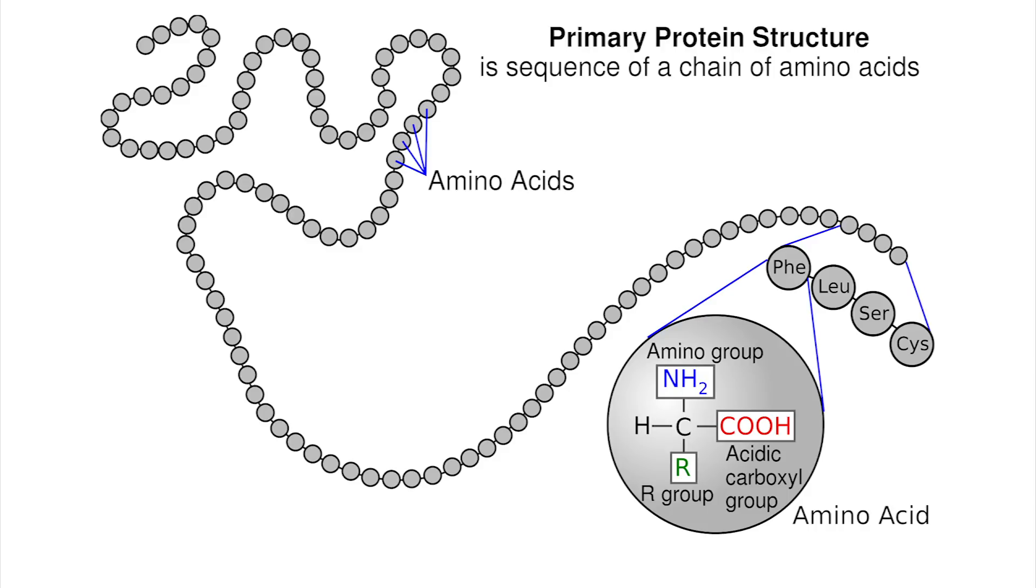Each of these silks are proteins, which means they're long polymer chains of amino acids, and by varying the pattern of the amino acids, the properties of the polymer changes.